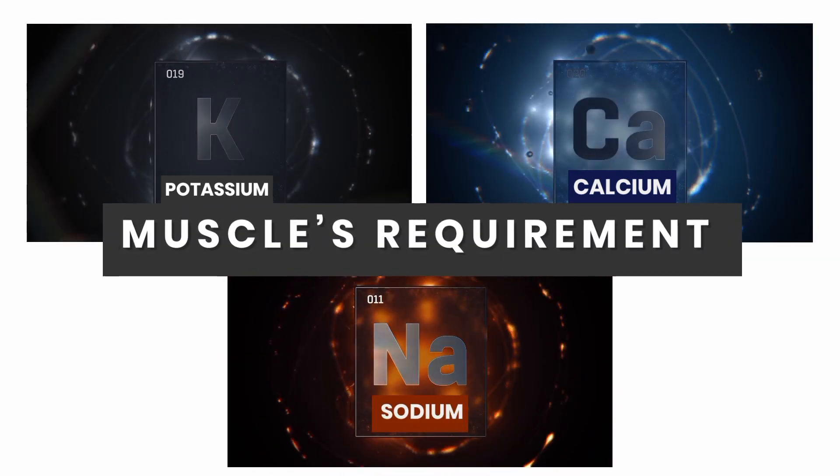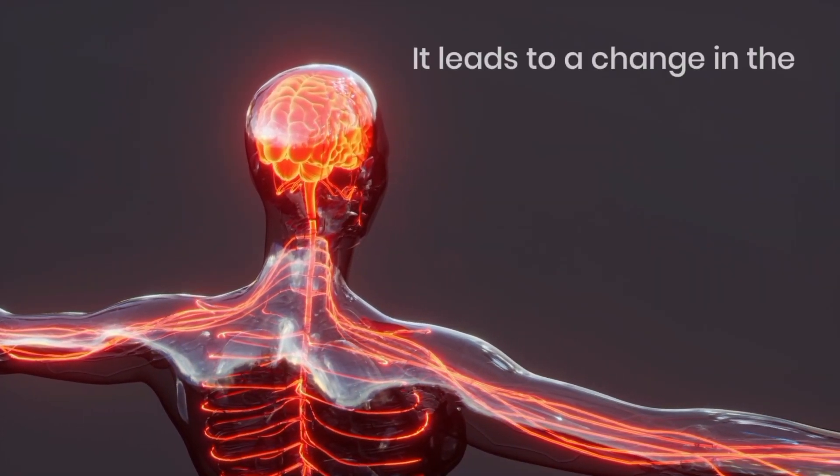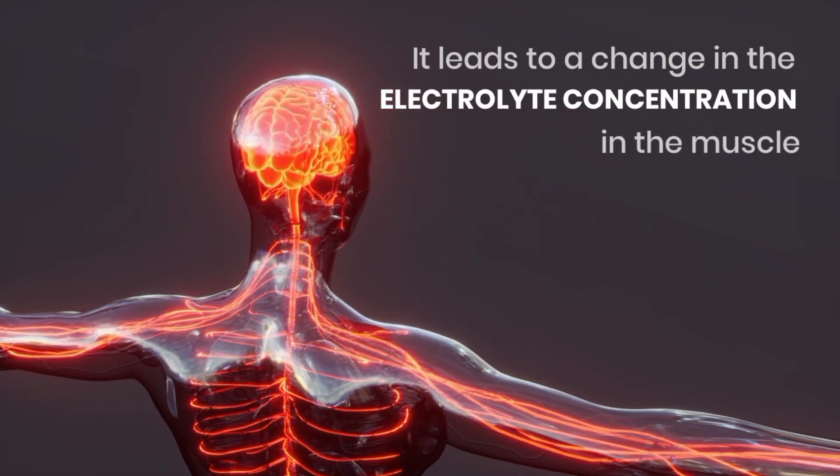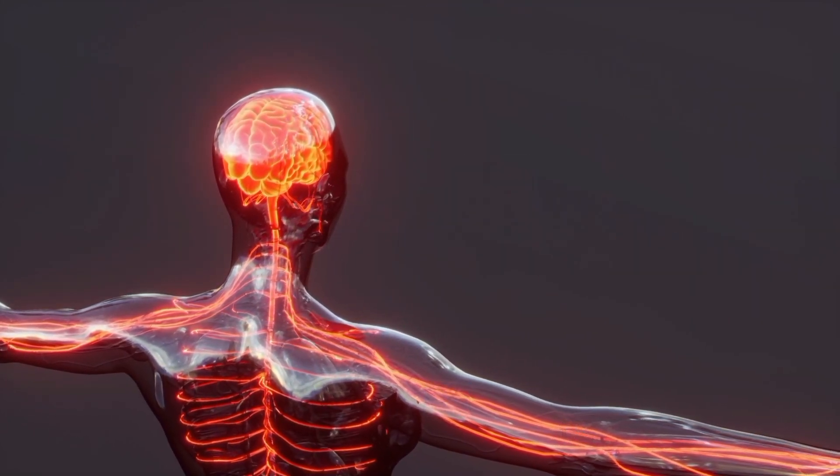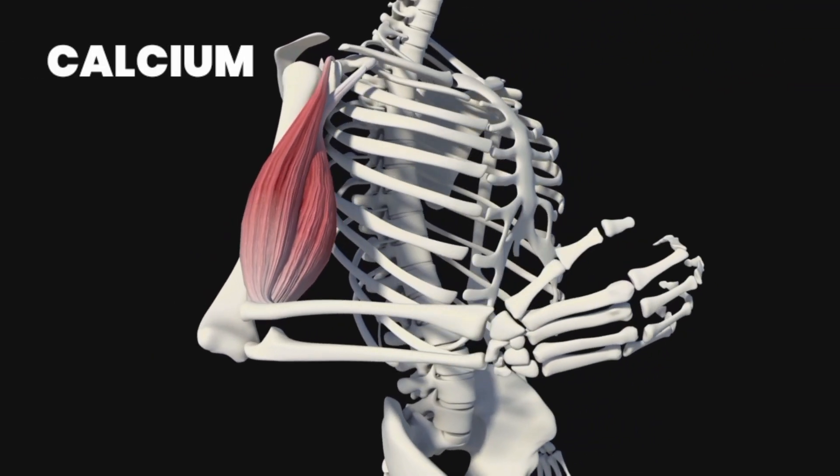A muscle needs calcium, potassium, and sodium to contract. When the muscle receives an impulse to contract from a nerve, it leads to a change in the electrolyte concentration in the muscle. Calcium and sodium enter the muscle cells, and potassium leaks out. Calcium, in particular, helps our muscles contract.